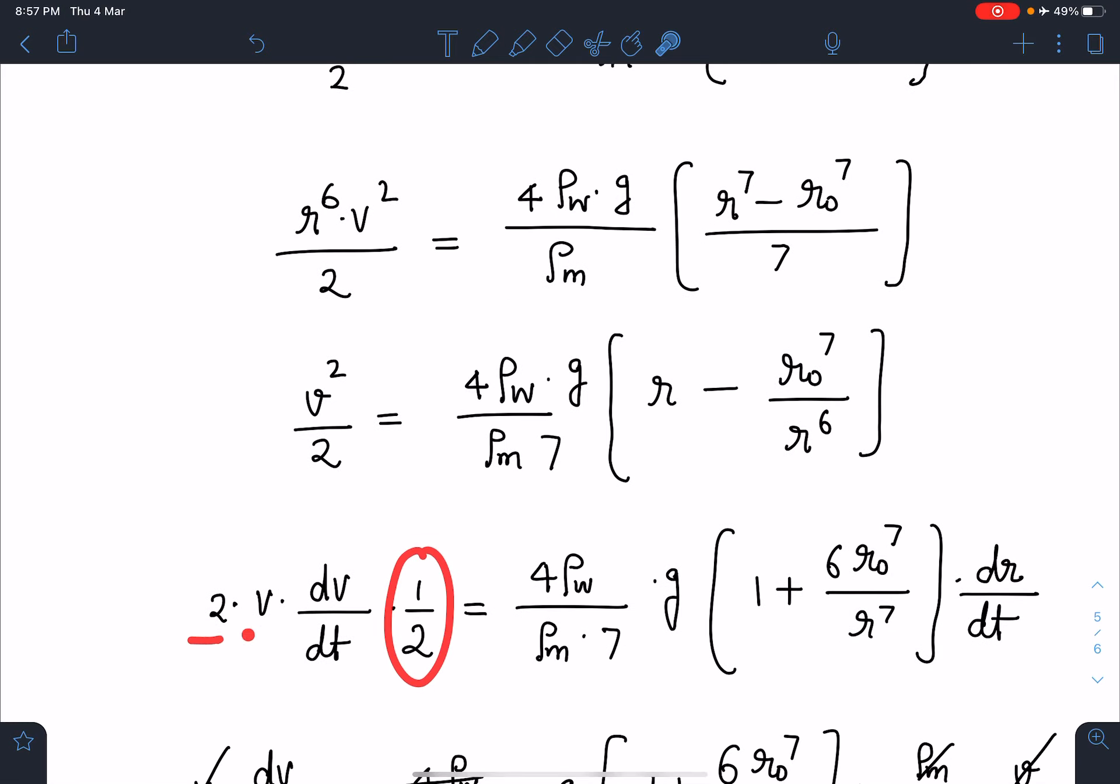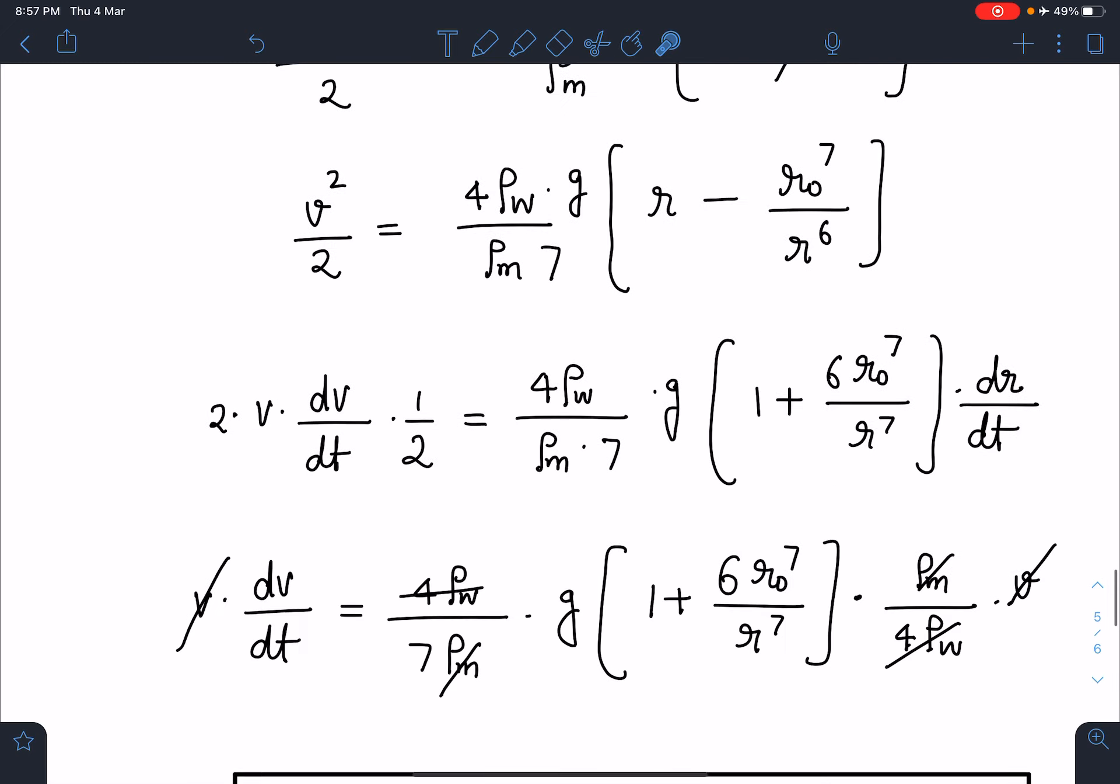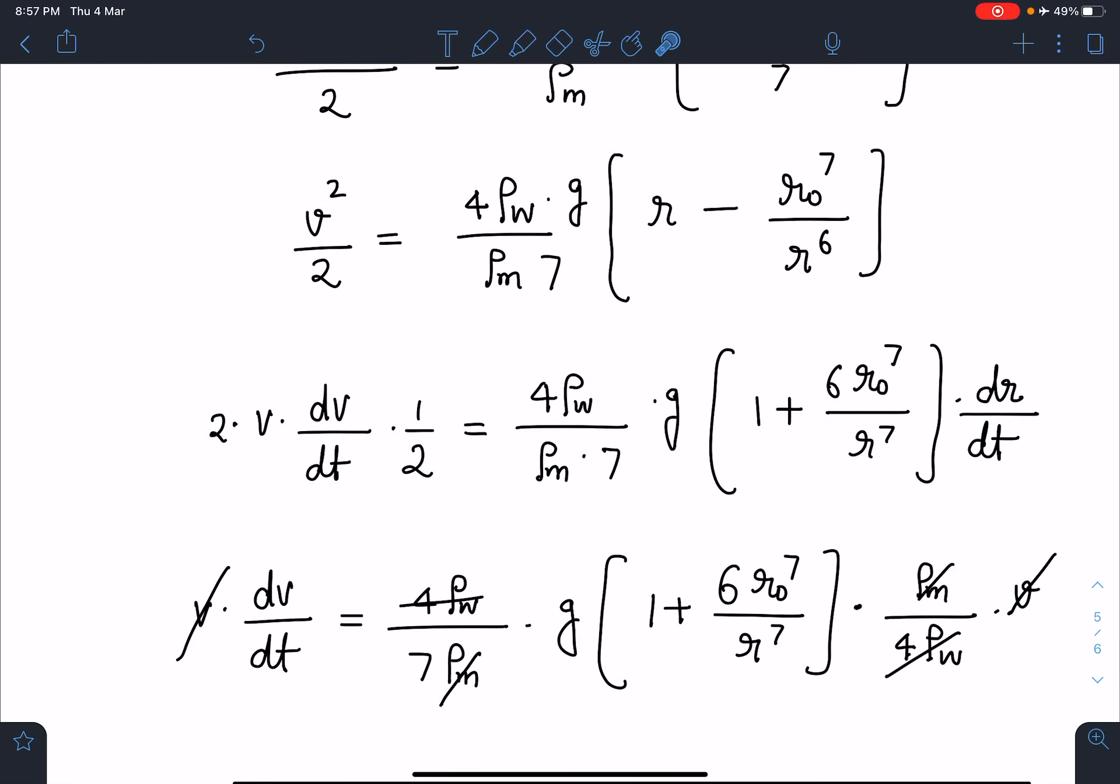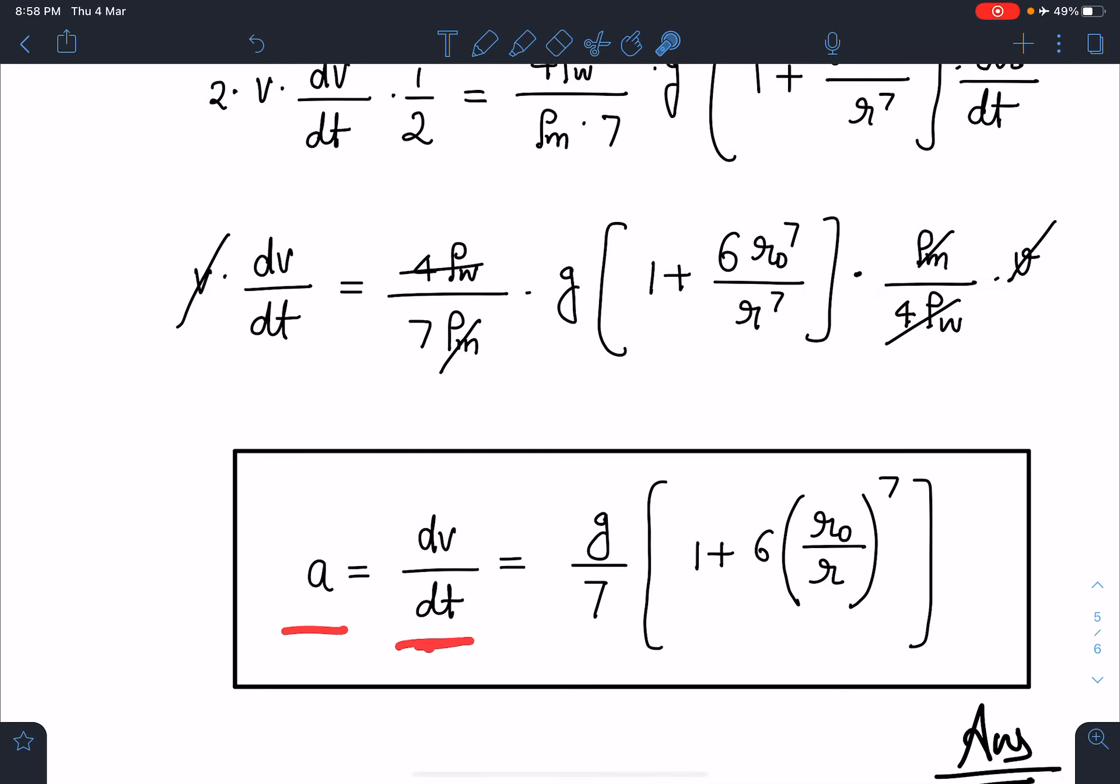Now if I differentiate this, this 2 will be as it is and it will become 2v·dv/dt. Constant terms are outside and here, this will become r^(-6), which gives 6r^(-7) times dr/dt. Again I will substitute the value of dr/dt. This half of 2 and 2 gets cancelled, v cancels, and ρ_m/4ρ_w is also getting cancelled. A very nice answer comes: acceleration a of the drop as a function of r is a = (g/7)[1 + 6(r_not/r)^7].